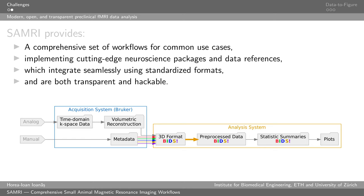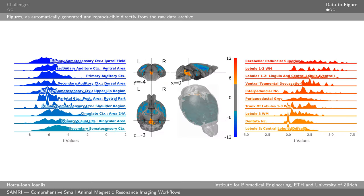Figures, as you could produce directly from the raw data automatically, without manual interaction — no dragging and dropping, nothing like that — could look like this. This is a map and a breakdown of the distributions of values in the most inhibited and excited regions following a stimulus application.